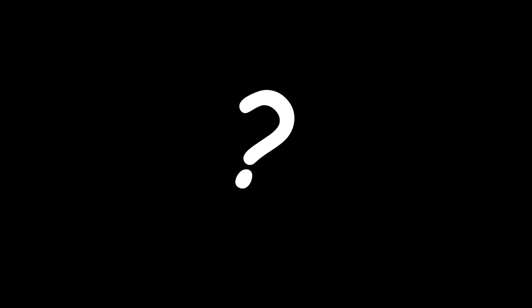How does the transmission of information happen? We have the sender and the receiver. The message is being passed through what we call the channel. When the receiver gets the message, it will send its feedback to the sender.